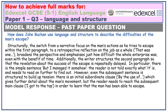Structurally, the switch from a narrative focus on the man's actions as he tries to escape within the first paragraph, to a retrospective reflection on the job as a whole — 'that was one' — broadens the perspective and emphasises just how difficult the whole enterprise was, even with the benefit of time. Additionally, the writer structures the second paragraph so that the revelation about the success of the escape is repeatedly delayed. In particular, there is the simple sentence 'but I managed it somehow' — the reader is not told exactly what 'it' is and needs to read on further to find out. However, even the subsequent sentence is structured to build up tension. There is an initial subordinate clause 'by the use of,' which gives further detail about the man's movements. But the reader needs to reach the subsequent main clause 'I got to the top' in order to learn that the man has been able to escape.